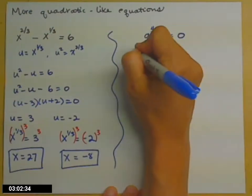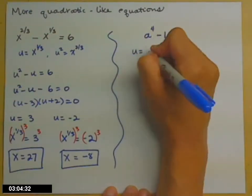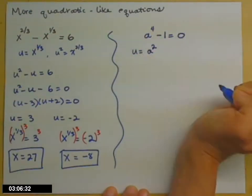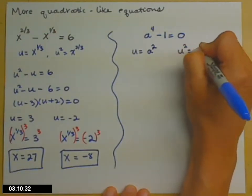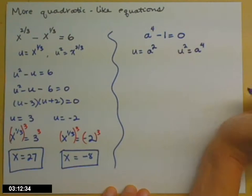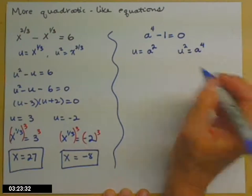So the substitution that I'm going to make is I'm going to let u equal a squared, so that u squared is a to the fourth. This is not an obvious one because you might see another solution method, but that's not going to get you all four solutions that I'm looking for. So let's go back up here then.